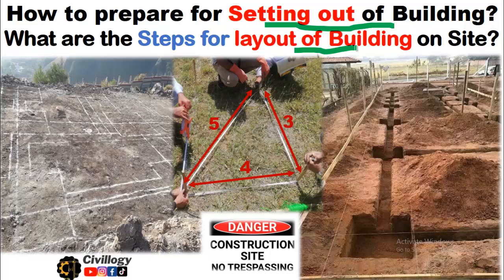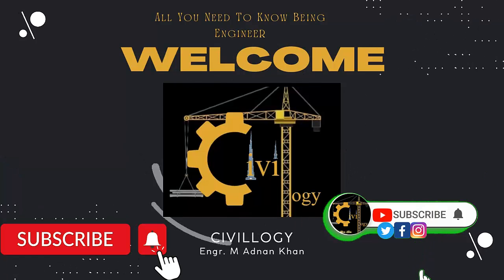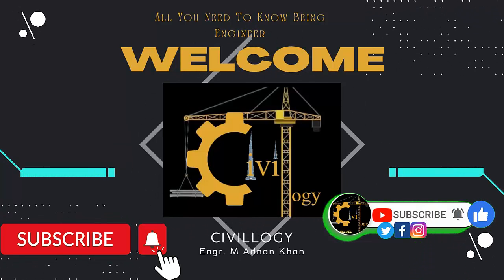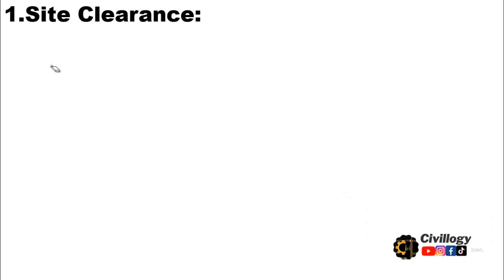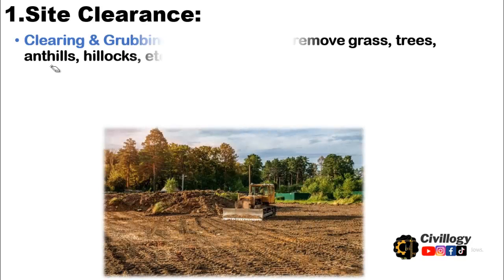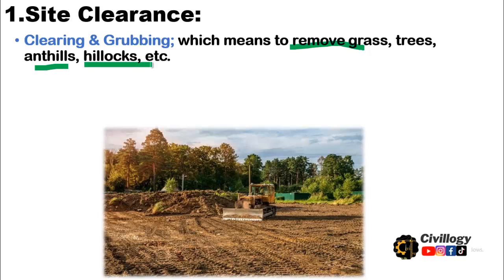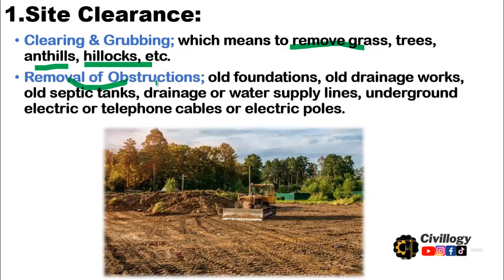The first step is site clearance. Before starting any construction project, we need to clear the site. Clearing and grubbing involves the removal of grass, trees, hillocks, and other obstructions such as old foundations, old drainage works, septic tanks, underground water supply lines, and electric or telephone cables and poles.